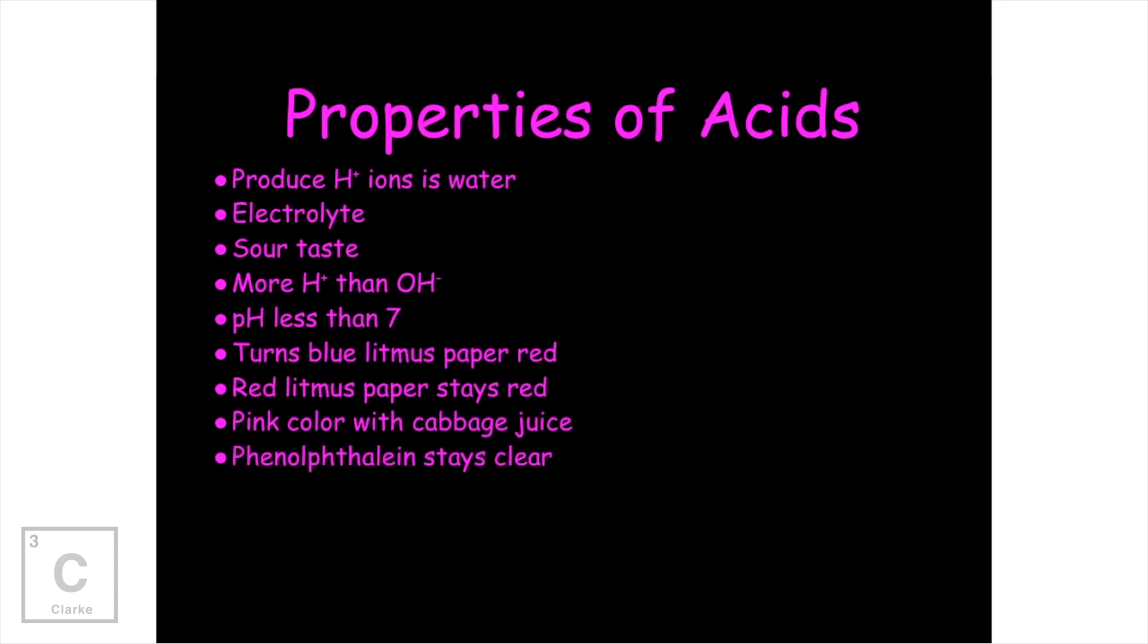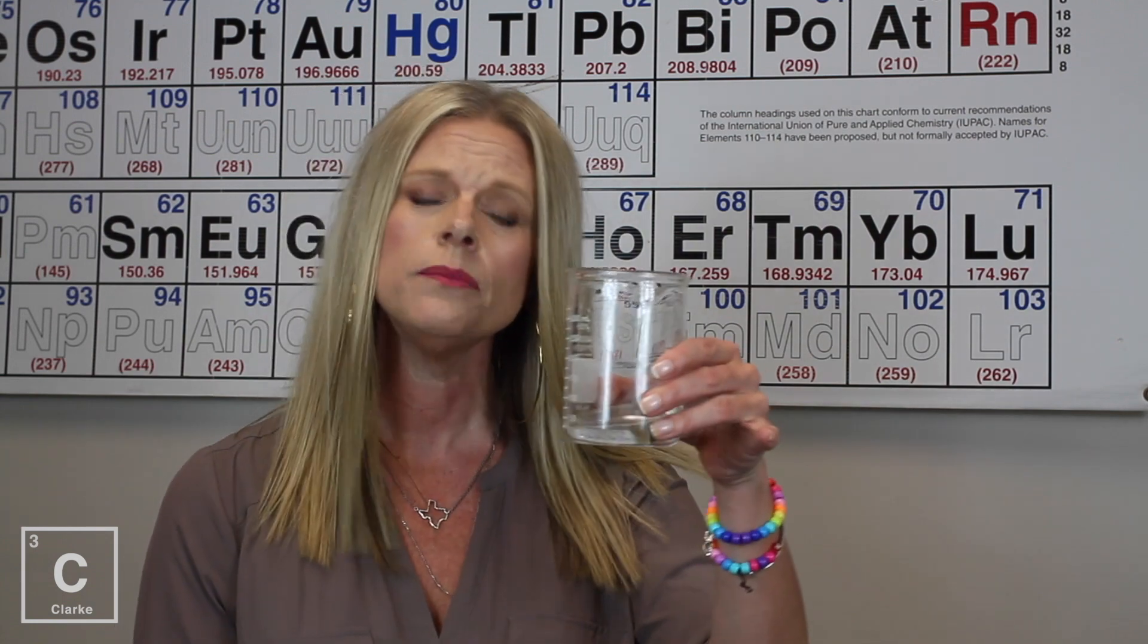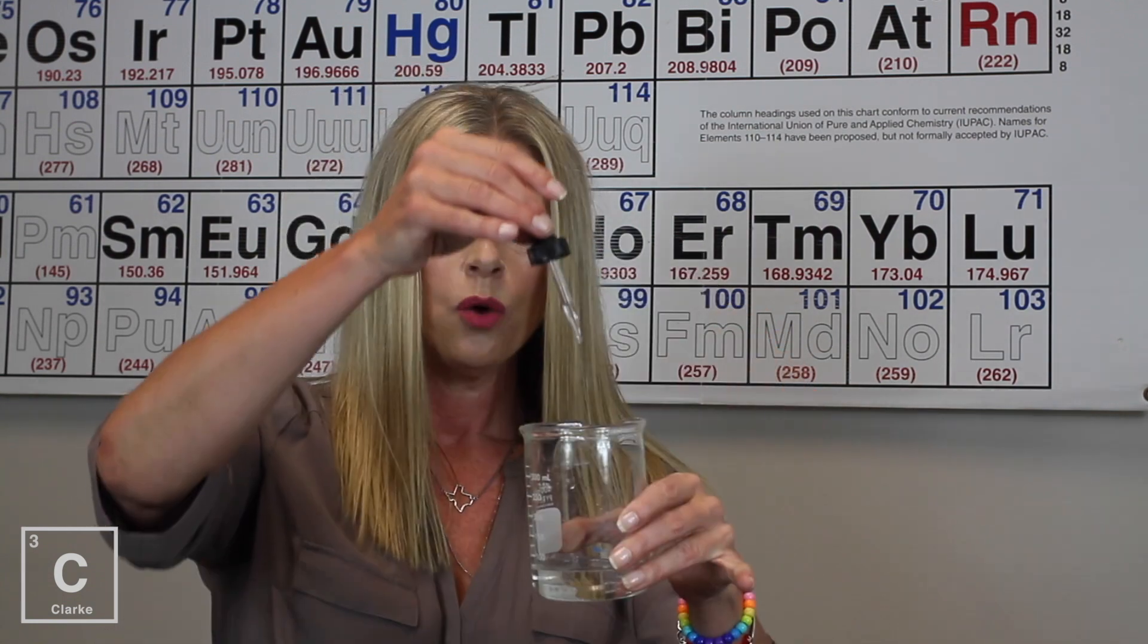A chemical indicator is phenolphthalein. And phenolphthalein stays clear when you mix it with an acid. Here, let's look. Okay, so I poured a little bit of our hydrochloric acid into the beaker. When I drop the phenolphthalein in, absolutely nothing happens. Phenolphthalein shows no reaction and it stays clear in an acid.